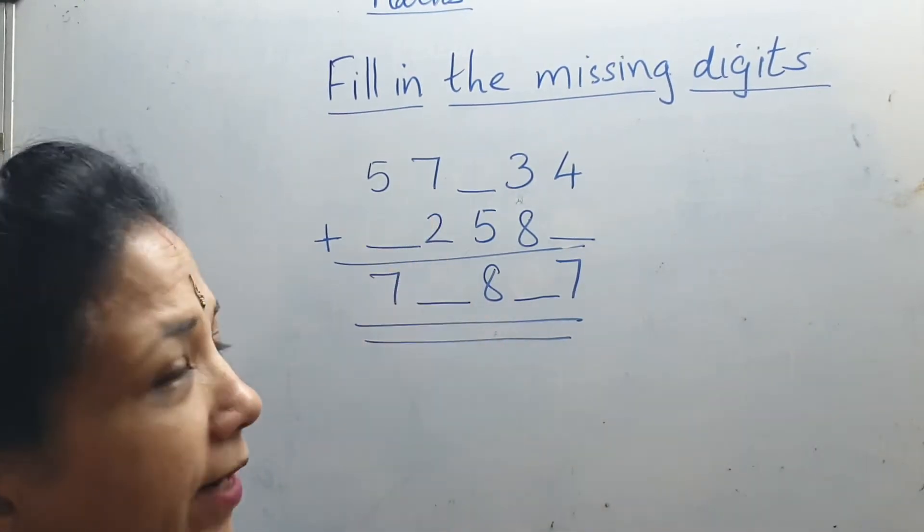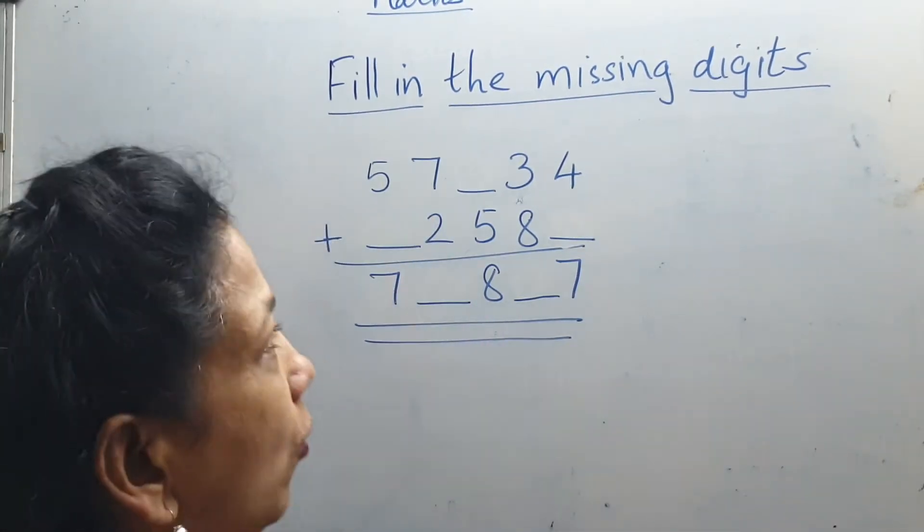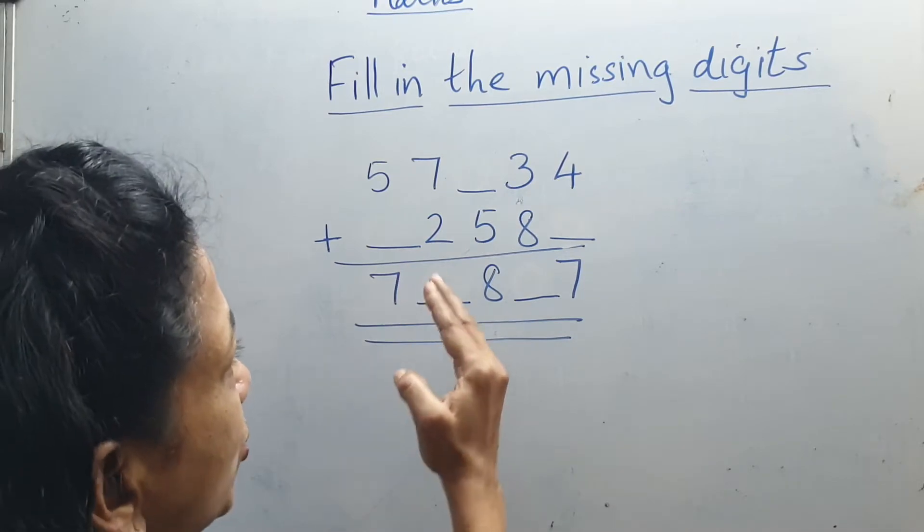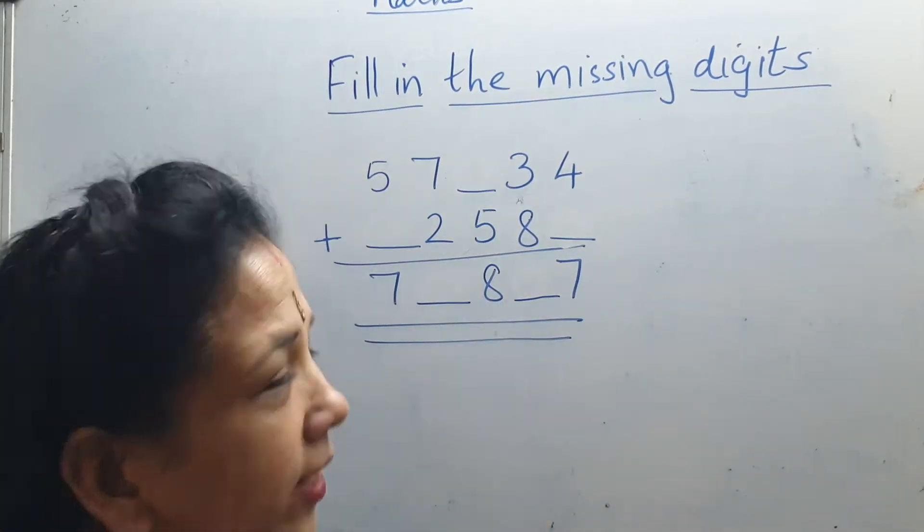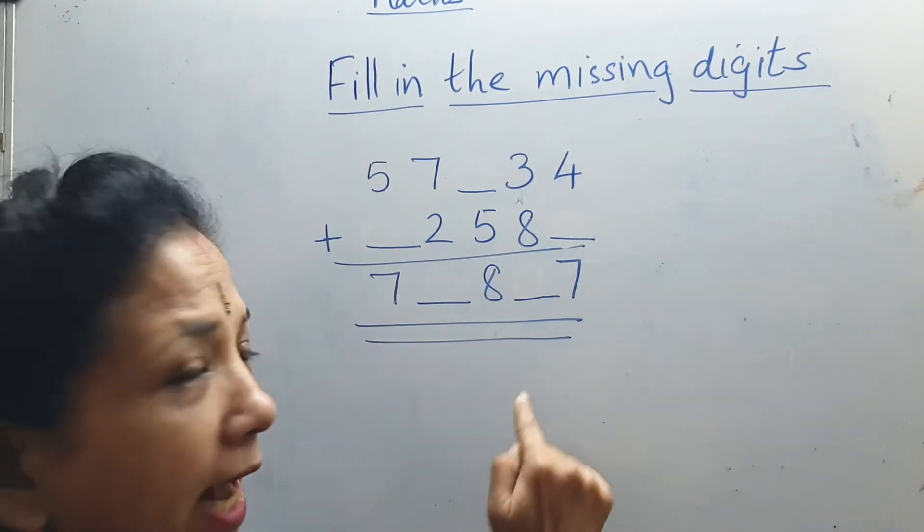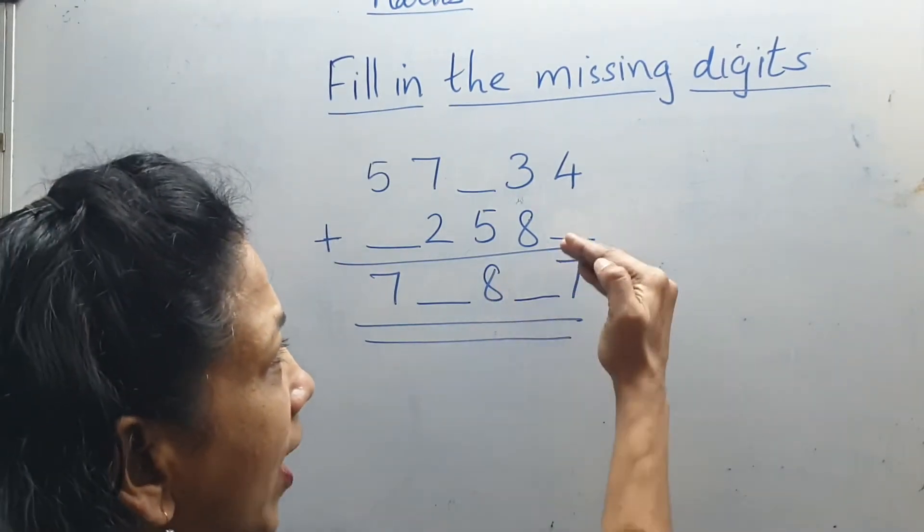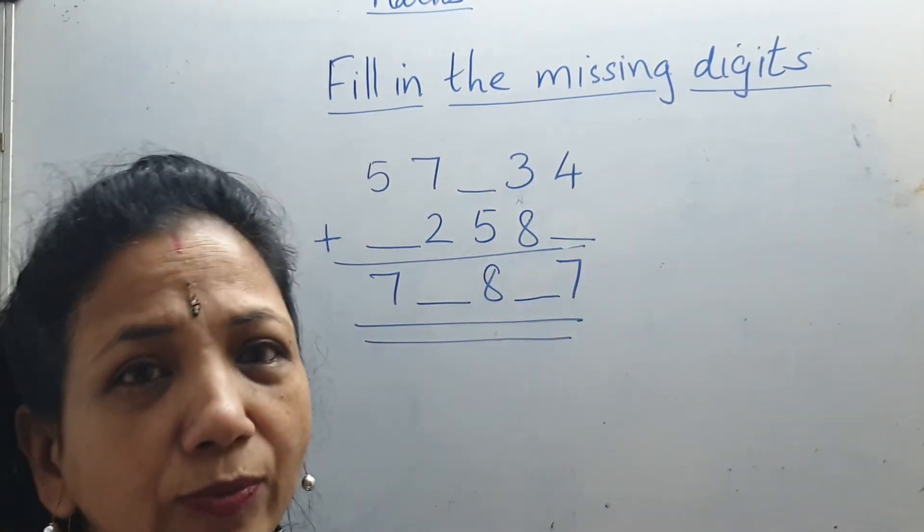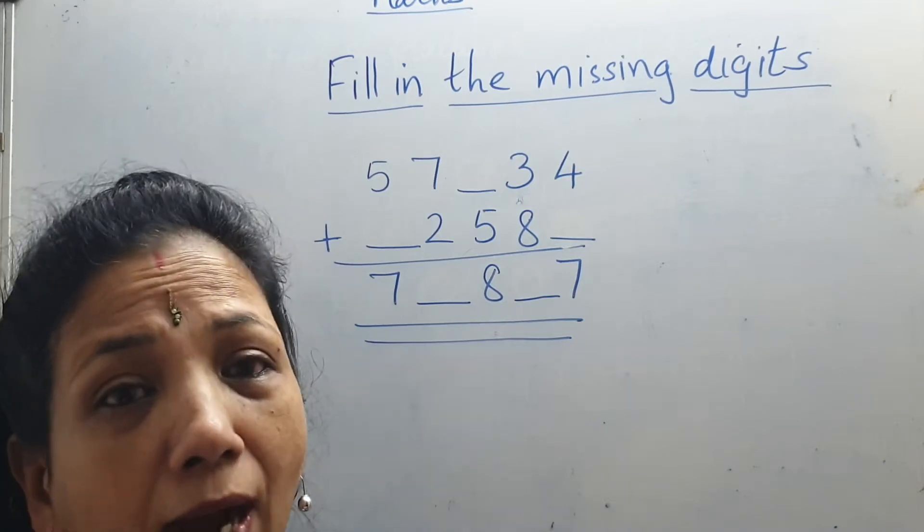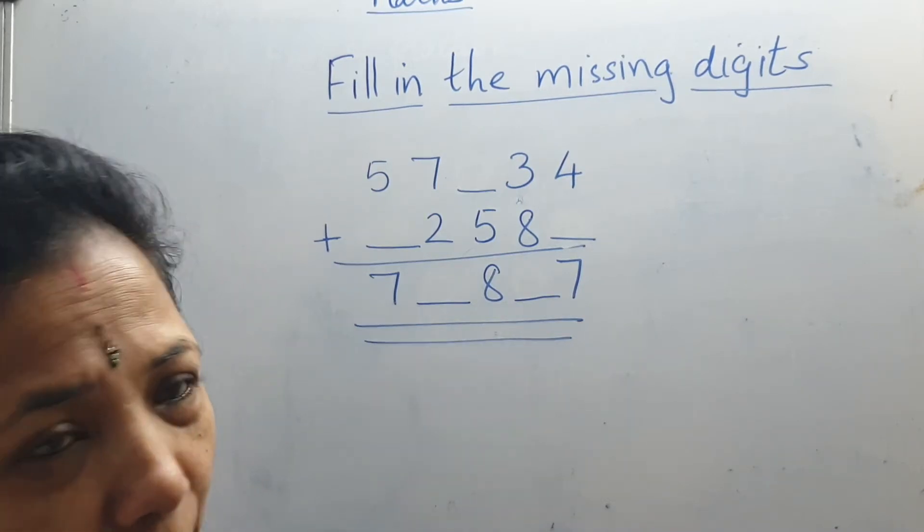Here 57_34 plus _258_ we are getting 7_8_7. So what are these numbers? Which one? Unknown numbers. What are the unknown numbers? How to find out?